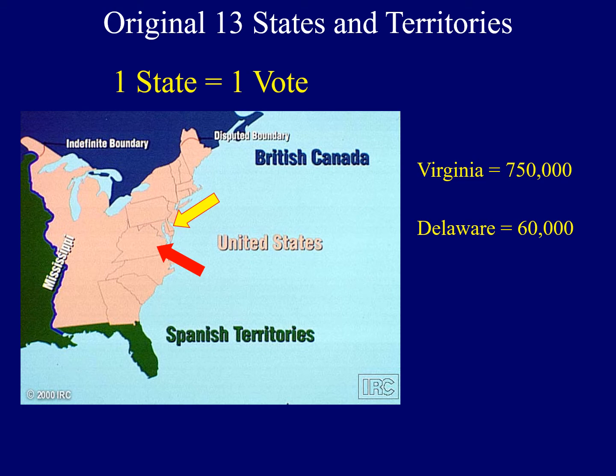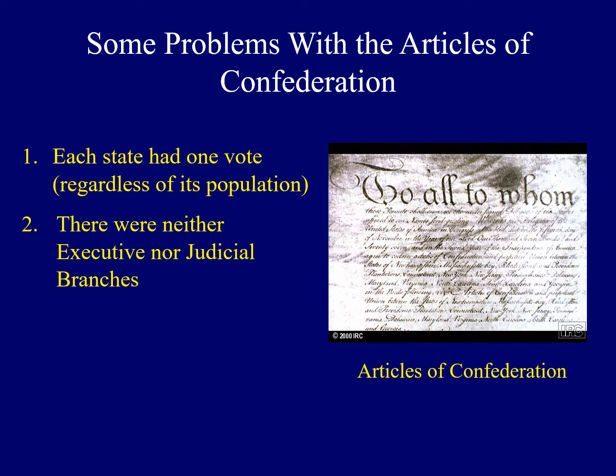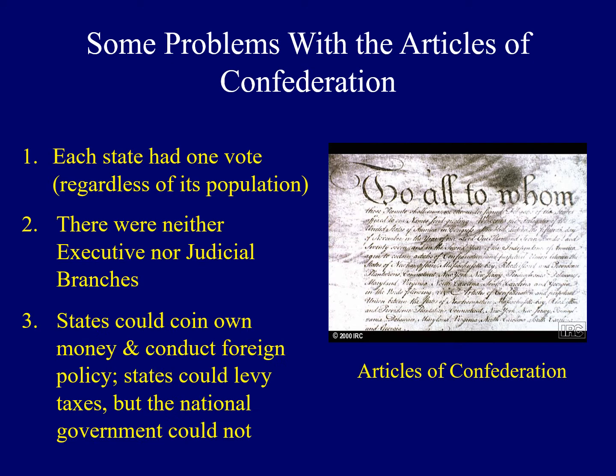There were some additional problems with the Articles. Secondly, there was neither an executive nor a judicial branch — essentially there was only one branch of government, the legislative branch, and there was a national Congress. Finally, states had a tremendous amount of power. Some of the powers they had were to coin their own money and even conduct their own foreign policy. States were allowed to levy taxes, but the national government was not.